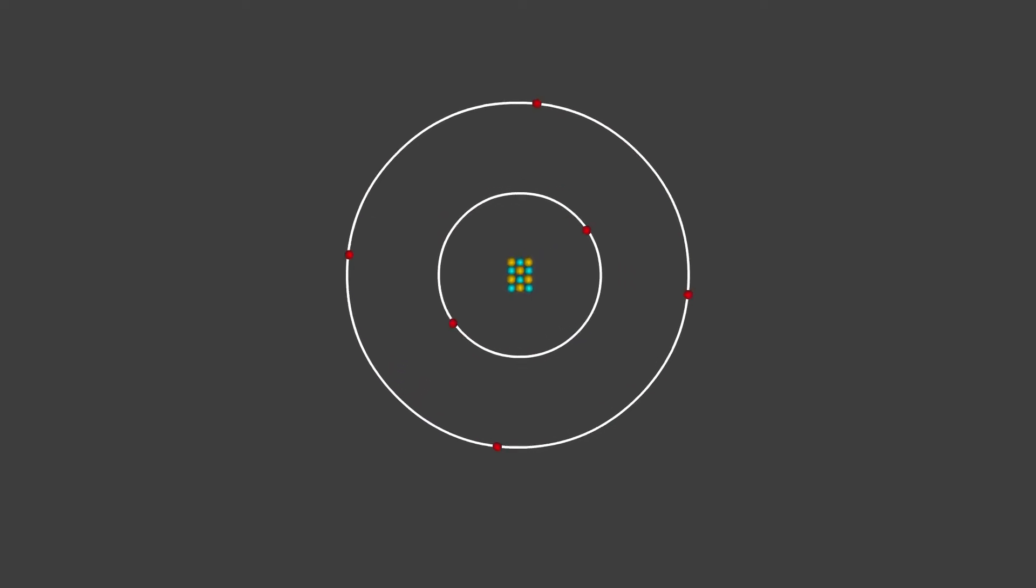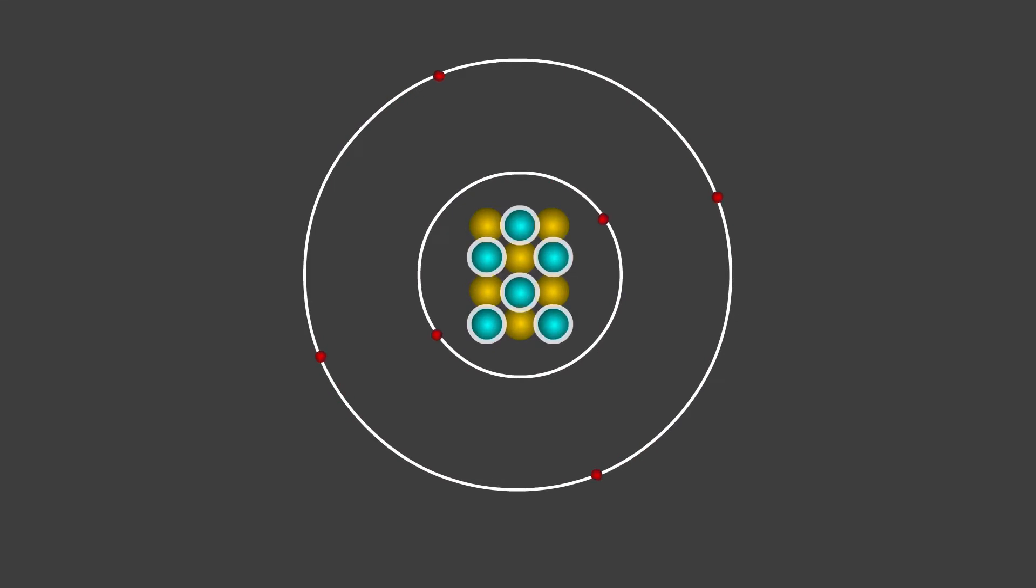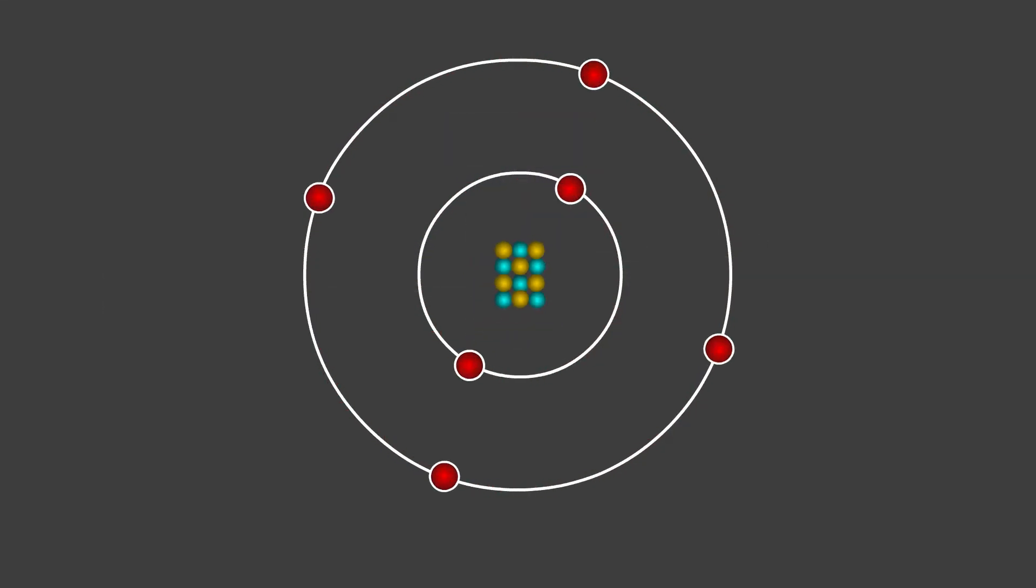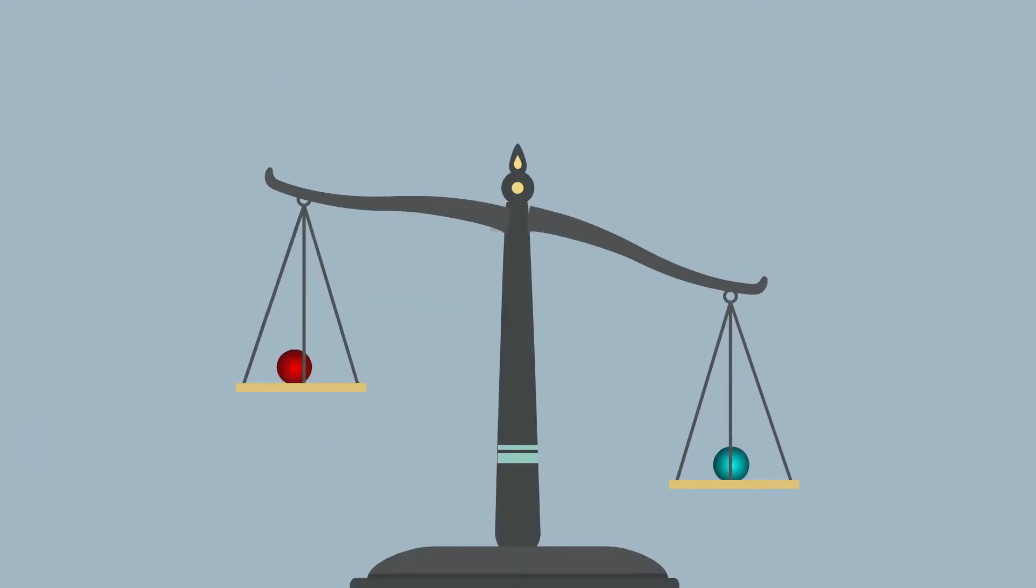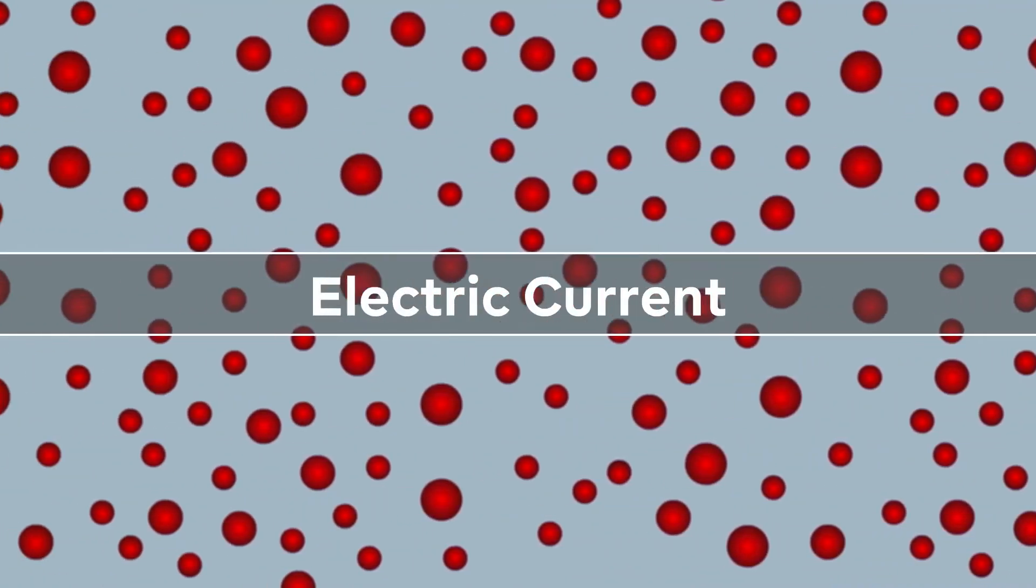We must have heard that all matter around us is made up of atoms. Atoms consist of protons, neutrons which form the nucleus of the atom. Orbiting around the nucleus are the electrons. Electrons which are much smaller and lighter than the protons can relatively move easily. And this movement of electrons is what causes electric current.